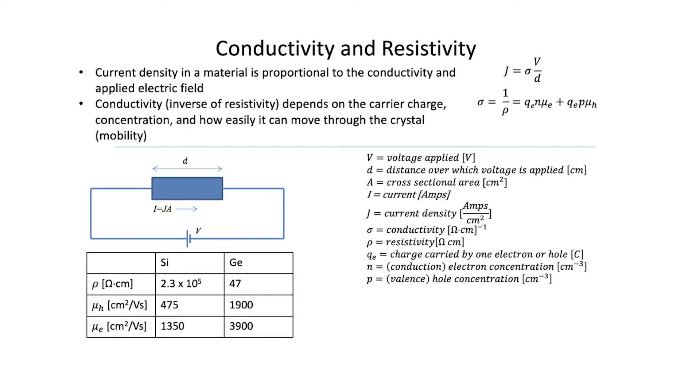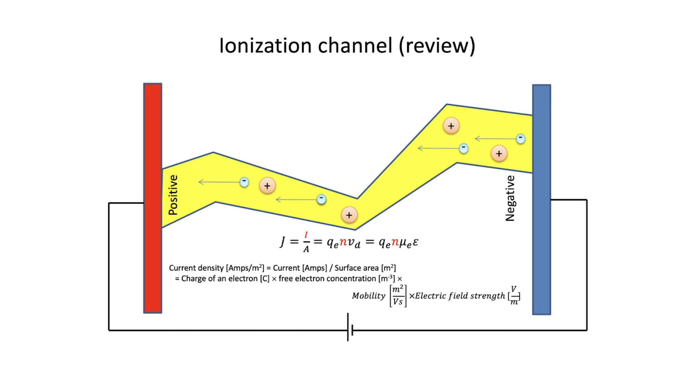So silicon, for example, has only something like 10 to power 10 electrons in its conduction band at room temperature and the same number of holes in its valence band. If that number were higher, the conductivity of silicon would then go up. This is very similar to the equation I showed you before with the bolt of lightning. The number of charge carriers available is directly proportional to the current.